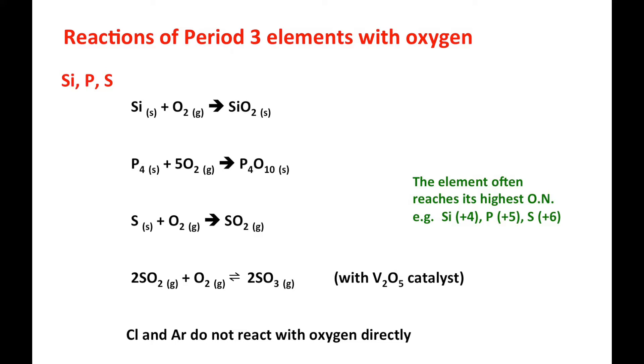So you can see, for the non-metal part, the element will achieve its highest oxidation number often. For example, silicon, phosphorus, and sulfur can obtain their highest oxidation number easily.